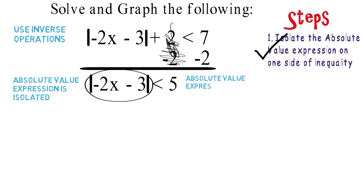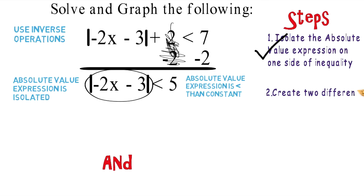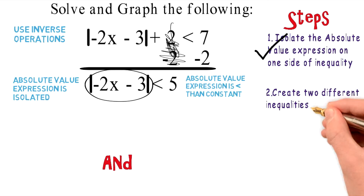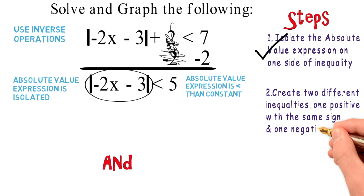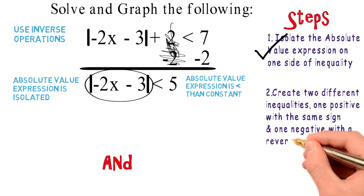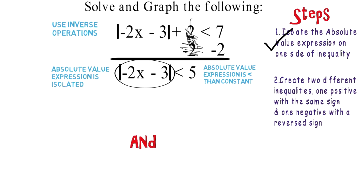As a side note, the absolute value expression is less than a constant, so this is going to be an and statement. Write the word 'and,' and now we move on to step number two, which is to create two different inequalities — one positive with the same sign, and one negative with the reverse sign.